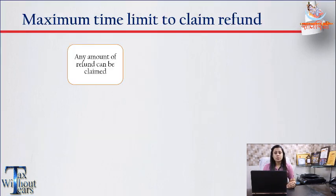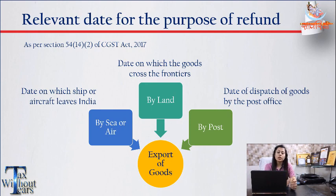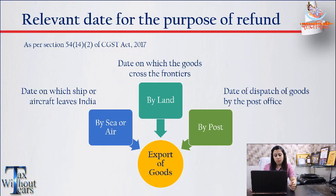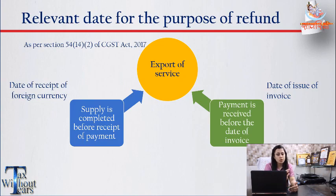The maximum time to claim a refund of taxes paid on inputs or output is two years from the relevant date. The relevant date is different for export of goods and export of services. For export of goods by sea or air, it is the date on which the ship or aircraft leaves India. By land, it is the date on which goods cross the frontier, and by post, it is the date of dispatch by the post office. For export of services, if the supply is completed before receipt of payment, the relevant date is the date of receipt of foreign currency. If payment was received before the date of invoice, the relevant date is the date of issue of invoice.